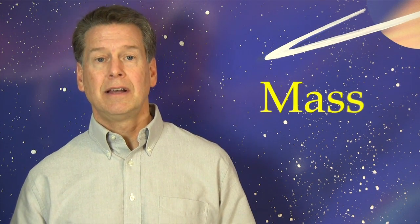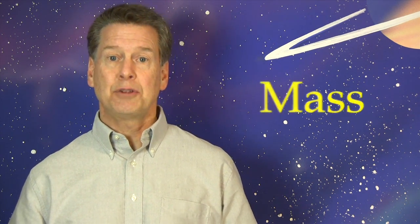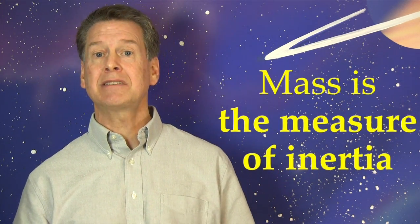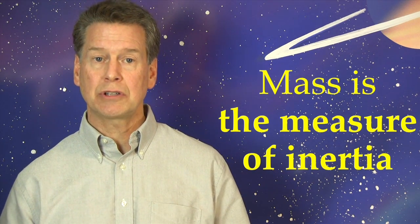We can make this more accurate. We can even measure inertia. The measure of an object's inertia is called its mass. That's what mass is. The numerical or quantitative indicator of inertia. The measure of an object's tendency to resist changes in motion.